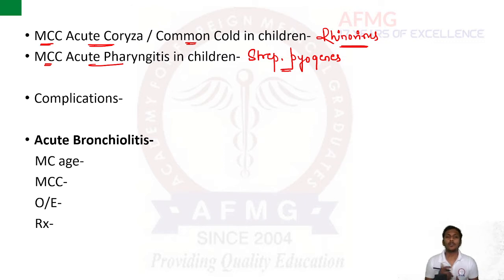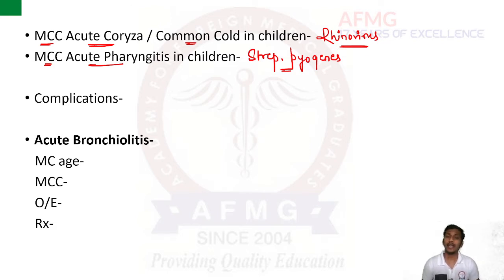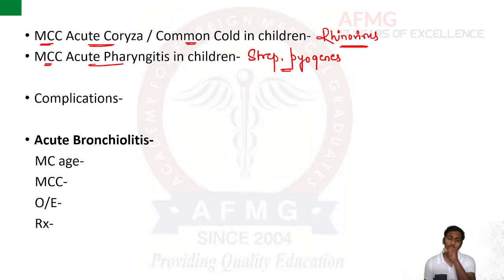In Streptococcus pyogenes pharyngitis, the child will likely have low-grade fever, sore throat, tonsillar exudates, and palatal petechiae. In cases of streptococcal pharyngitis, even a membrane can be present at times in the oropharynx.